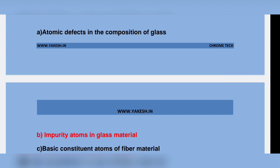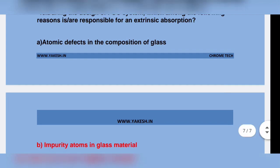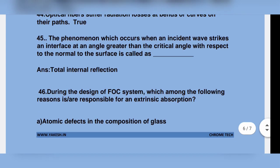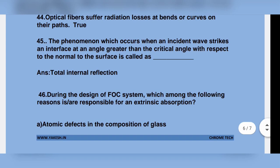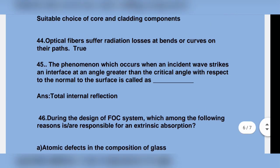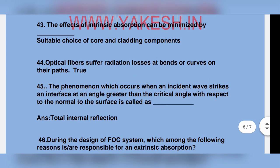Atomic defects in the composition of glass. Impurity atoms in glass material. During the design of a FOC system, which among the following reasons are responsible for extrinsic absorption? The phenomena which occurs when an incident wave at an interface at an angle greater than the critical angle with respect to the normal to the surface is called total internal reflection.